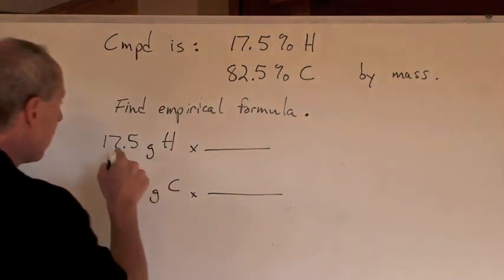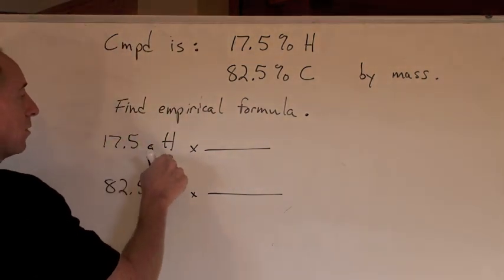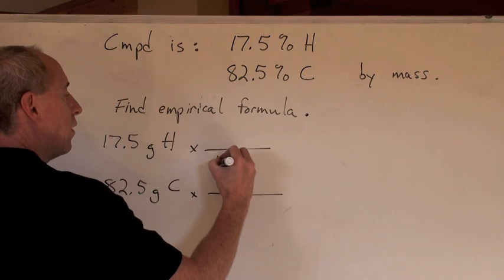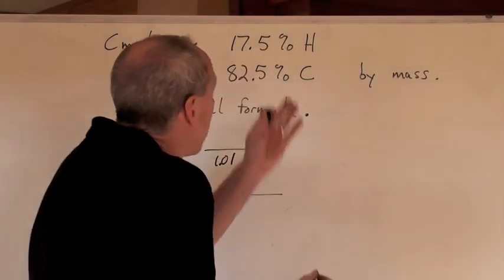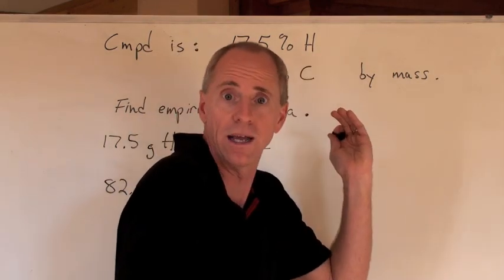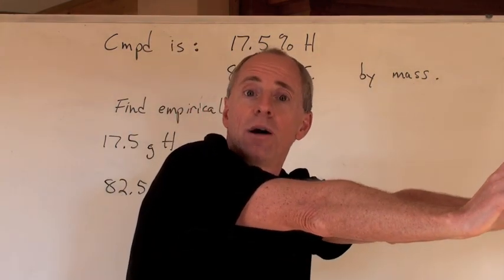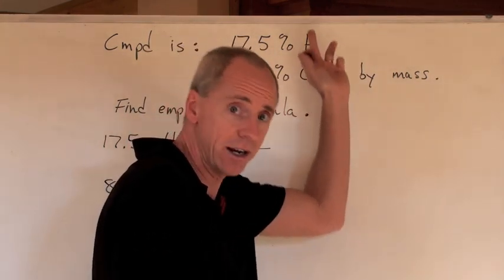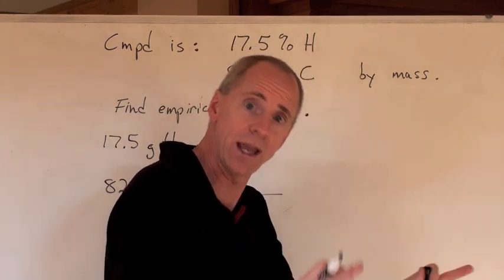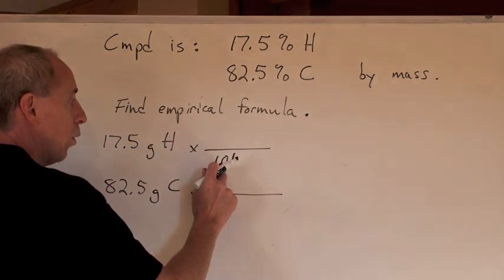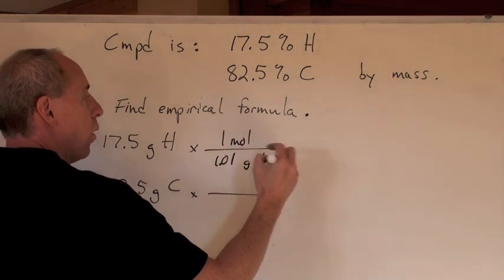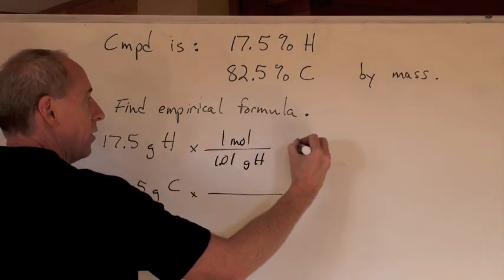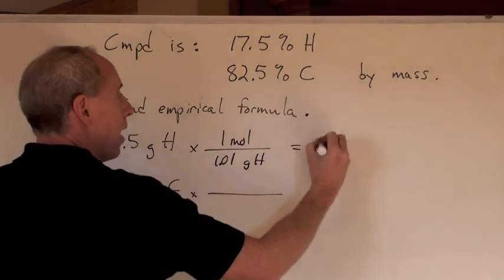So if we take 17.5 grams of hydrogen, and we divide by the molar mass of just hydrogen, it's not H2, it's not diatomic hydrogen, because there's no diatomic hydrogen in this formula. Hydrogen by itself is diatomic, it's H2. Not here, not in a formula with carbons. So we just use that formula of 1.01 grams of hydrogen. That's for every one mole of hydrogen. Grams will cancel here and we'll be left with moles.